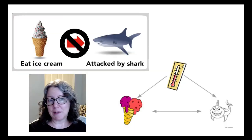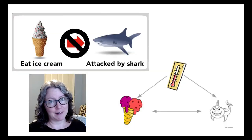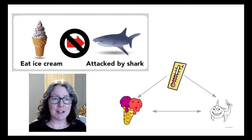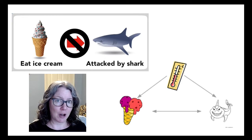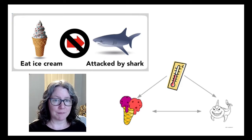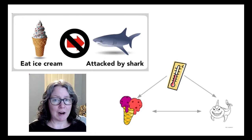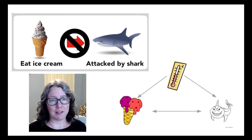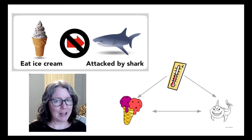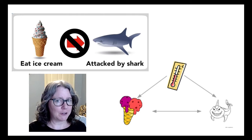The most famous example of how correlation is not causation is the fact that ice cream sales are correlated with shark attacks. But people eating more ice cream does not actually cause them to be eaten by sharks, even if you can create a story in your head where that makes sense.